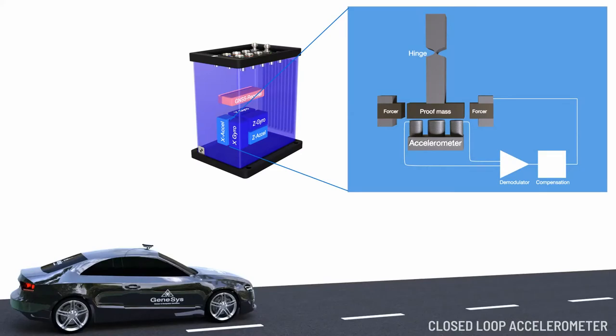A closed-loop accelerometer consists of a proof mass swinging at a hinge. Below the proof mass is an electromagnetic coil. On the right and left side are magnetic forcers that are connected to the coils through a demodulator and a compensation element.